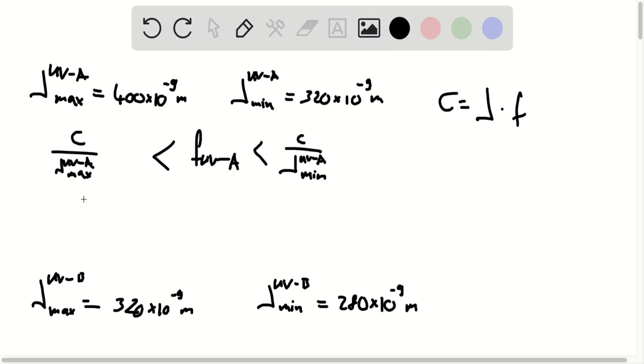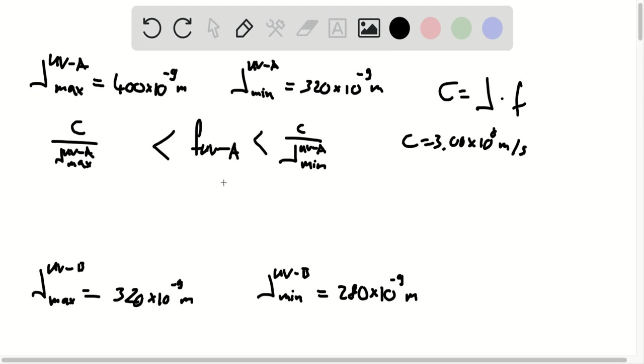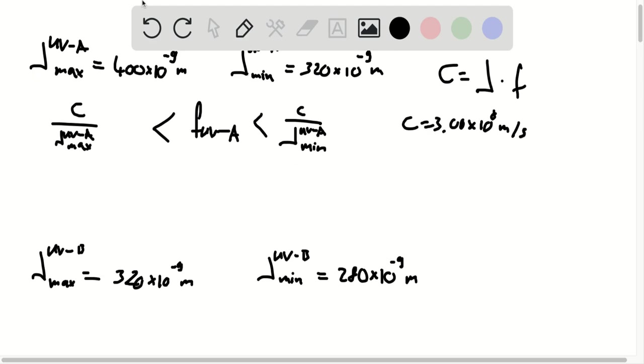And if you calculate these values now, you just have to put in c is equal to 3.00 times 10 to the 8 meters per second as always. And if you calculate this,